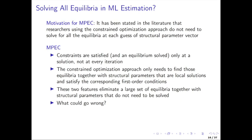The constrained optimization solver tries to massage all this at once to maximize the likelihood function. The constraint optimization approach only then needs to find equilibria together with structural parameters that are local solutions satisfying the first order conditions. These two features eliminate a large set of equilibria and structural parameter combinations that you would otherwise need to look at with NFXP. This sounds very appealing, but almost too good to be true. In cases where you really have a huge multiplicity of equilibria, it can be really hard to find the global maximum — you often end up in a local maximum. We saw some of those problems arising in the static game example last time.